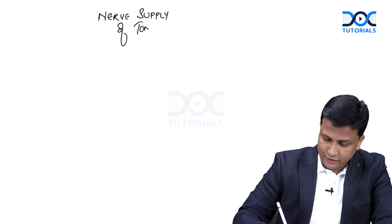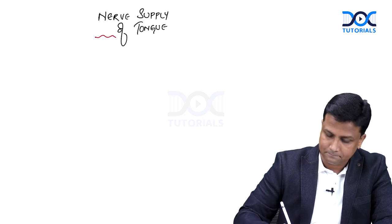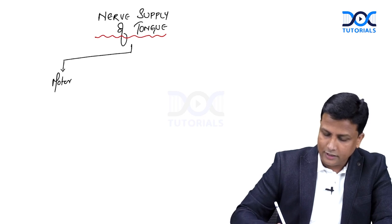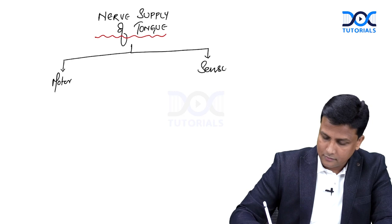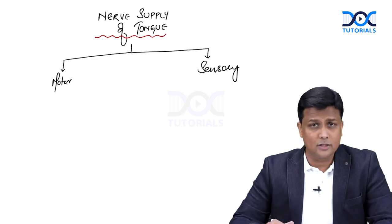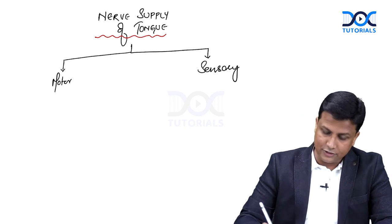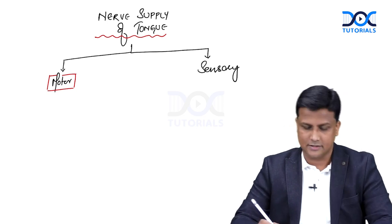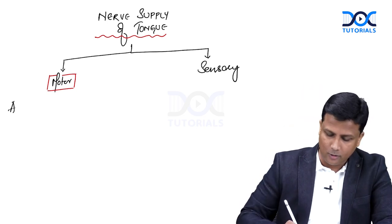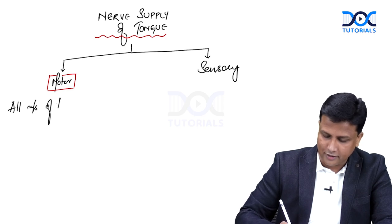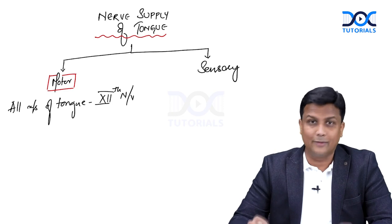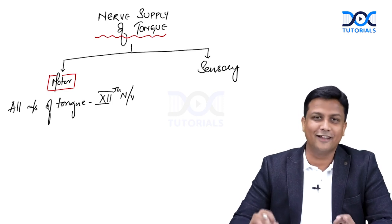The nerve supply of the tongue can again be divided into two categories: the motor supply and the sensory supply. For motor supply — supply to the muscles — every medical student should know that all muscles of the tongue are supplied by which nerve? That is the twelfth nerve — the hypoglossal nerve. All muscles of the tongue are supplied by the hypoglossal nerve.